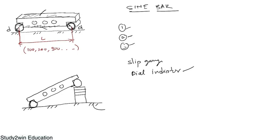Here on the surface table, one roller of the sine bar is rested on the surface table and another roller is kept on the slip gauge, so that the top surface of the work piece becomes horizontal. This is the work piece for which I want to measure angle theta. You keep the work piece on the sine bar — since the work piece would slide down, there is a stopper arrangement on the sine bar. Then we put the dial indicator on the surface of the work piece to check if it is really horizontal or not.